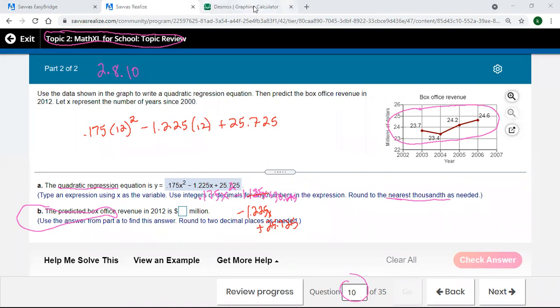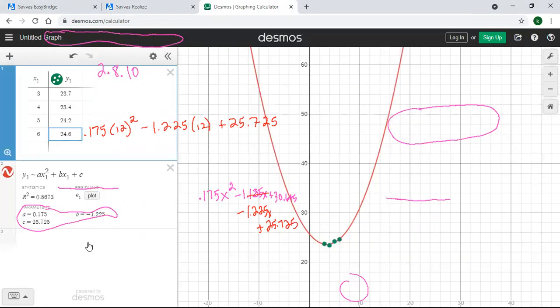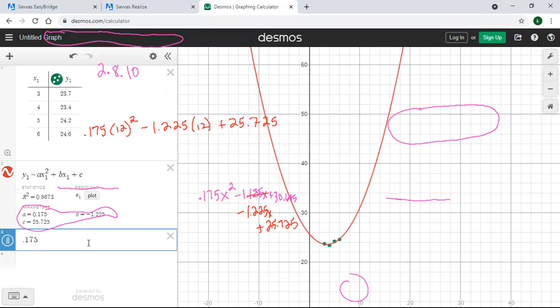0.175 times 12 squared minus 1.225, parentheses just multiply by that 12, and then plus the 25.7.